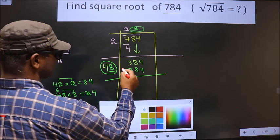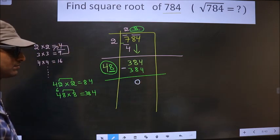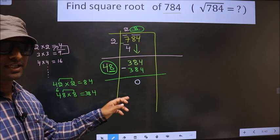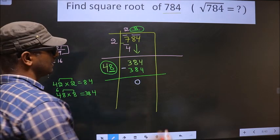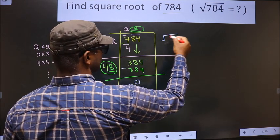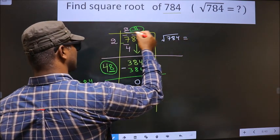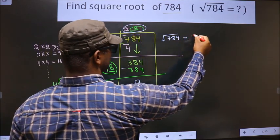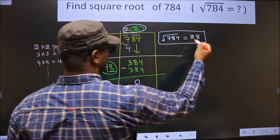Now you subtract these two. We get 0. We got 0 here means the given number is a perfect square, and the square root of 784 is this number, that is 28. So this is our answer.